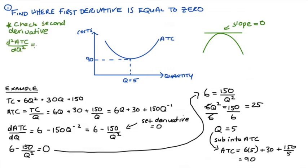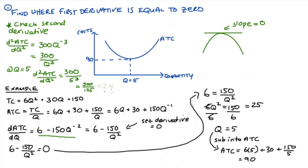For our example, we find the second derivative by taking the derivative of the first derivative. And if we do that we get 300q to the power of negative 3, which is equal to 300 divided by q to the power of 3. And here I'm just using the rules of my exponents again and some calculus. Evaluated at q is equal to 5, we get 300 divided by 5 to the power of 3, which is 300 divided by 125, which is equal to 2.4.